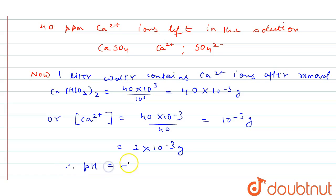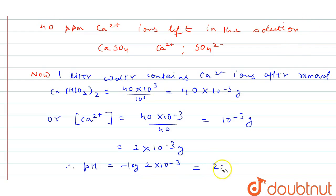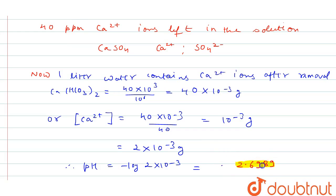pH equals minus log of [H⁺]. H⁺ is 2 into 10 to the power minus 3. The final answer is 2.699, approximately 2.699. This is your final answer.